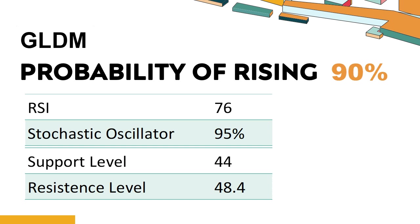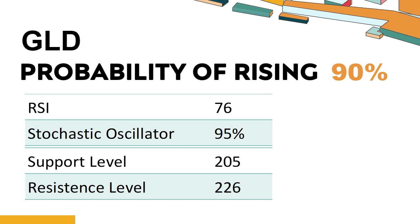GLDM's short-term support level is 44.9. If it falls below 44.9 during the session, it will have a chance to test 44. GLDM's short-term resistance level is 47.1. If it breaks through 47.1 during the session, it will look up to 48.4.